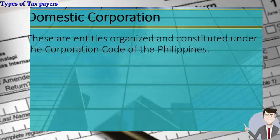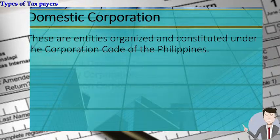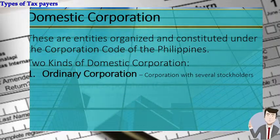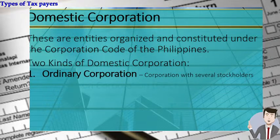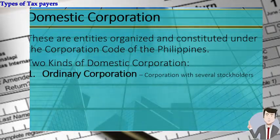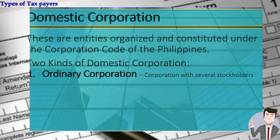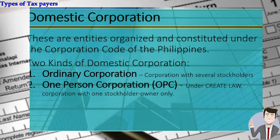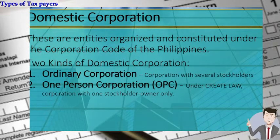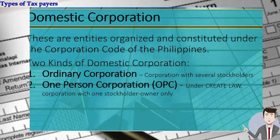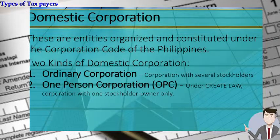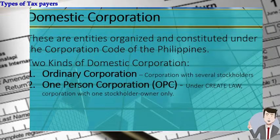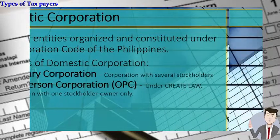A domestic corporation is an entity organized and constituted under the corporation code of the Philippines. There are two kinds: ordinary corporation — the typical corporation studied in accounting subjects — and the newly created one-person corporation or OPC under the CREATE Law. For tax purposes, domestic corporations are subject to capital gains tax, final tax on passive income such as 20% on interest income from bank deposits, regular income tax at 30% of taxable income, and minimum corporate income tax or MCIT.